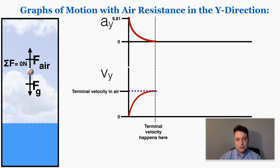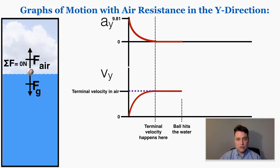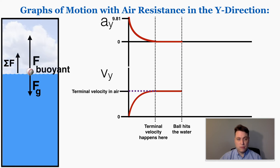Since it hasn't hit the water yet, it continues to fall at that terminal velocity — velocity stays constant and acceleration stays at zero. Then the ball hits the water. When it does, it's no longer feeling air resistance pushing it up; instead it experiences a buoyant force, which is the name for the force from water.